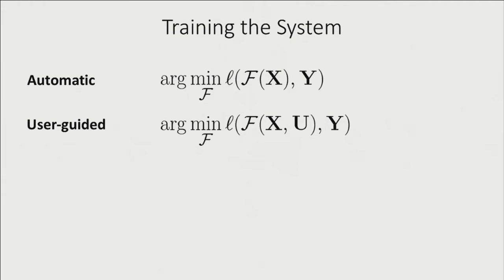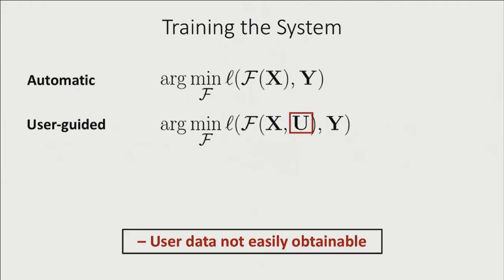However, there is a major problem: the presence of the user data. Whereas it's simple to download millions of images and split them into grayscale and color components to get X and Y, obtaining millions of user interactions is likely to be expensive. There's also a more nefarious problem: the user interaction will be dependent on the system, and the system itself needs to be trained on the user data. We have a chicken-and-egg problem that we need to bypass.